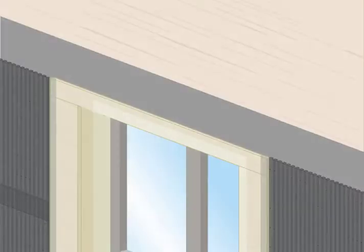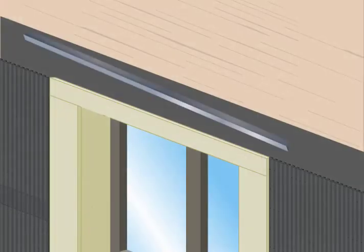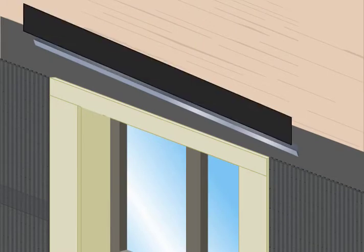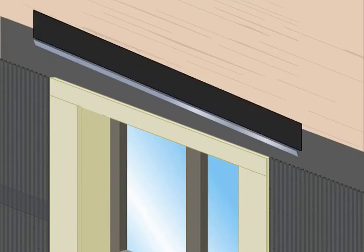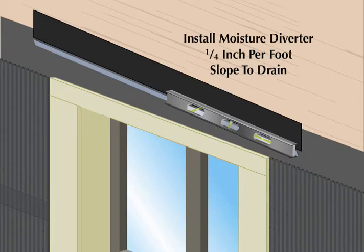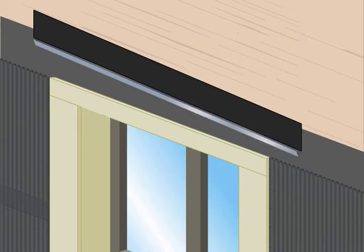The Moisture Diverter is installed in a watertight fashion, immediately above mounting flanges or flashing systems at a 1/4 inch per foot slope to drain. The Moisture Diverter should extend a minimum of 4 inches beyond the opening.